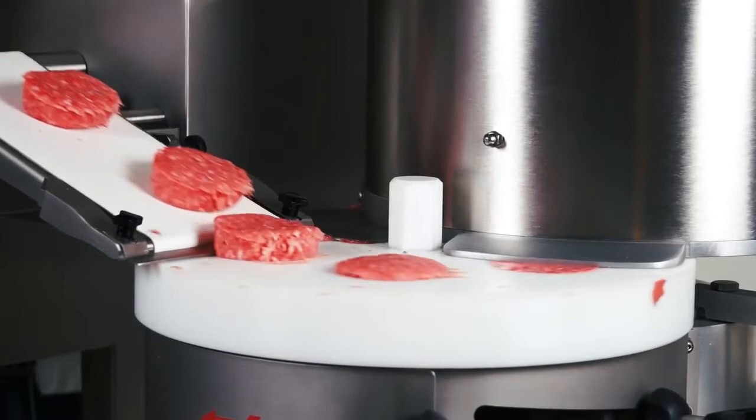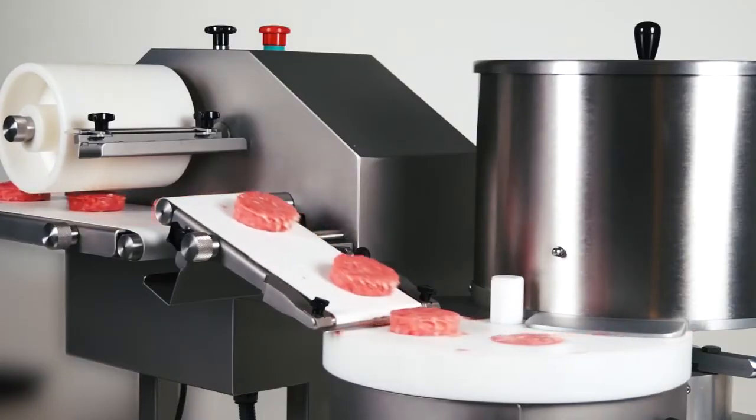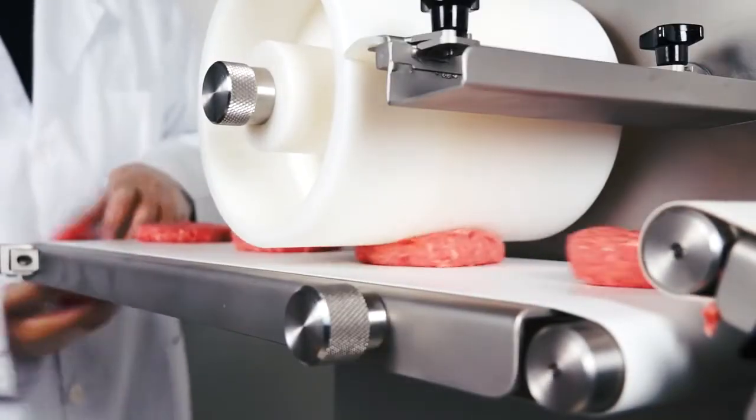The conveyor belts allow the portion to be extracted from the mold and taken to the second belt where a roller gives the final finish to the product.